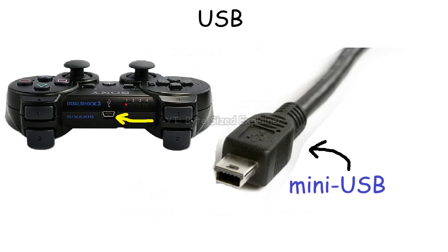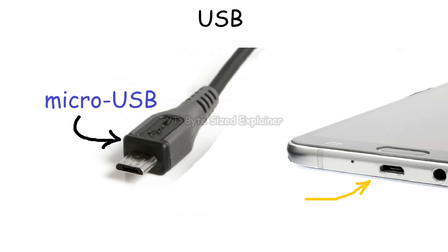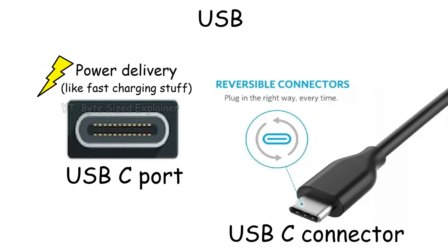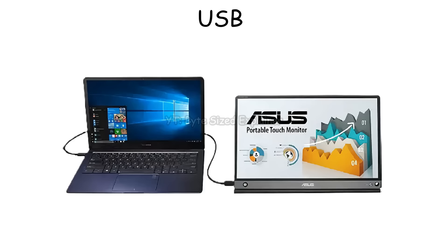Mini B was often used for peripherals like the PS3 controller, while Micro B became the standard for charging phones before USB-C took over. And then we have USB Type C, the reversible connector that basically does everything USB-A can, but faster and with more power delivery. Even USB-C ports can carry video signals, so you can connect external displays like touchscreen portable monitors to your laptop with just that one cable.